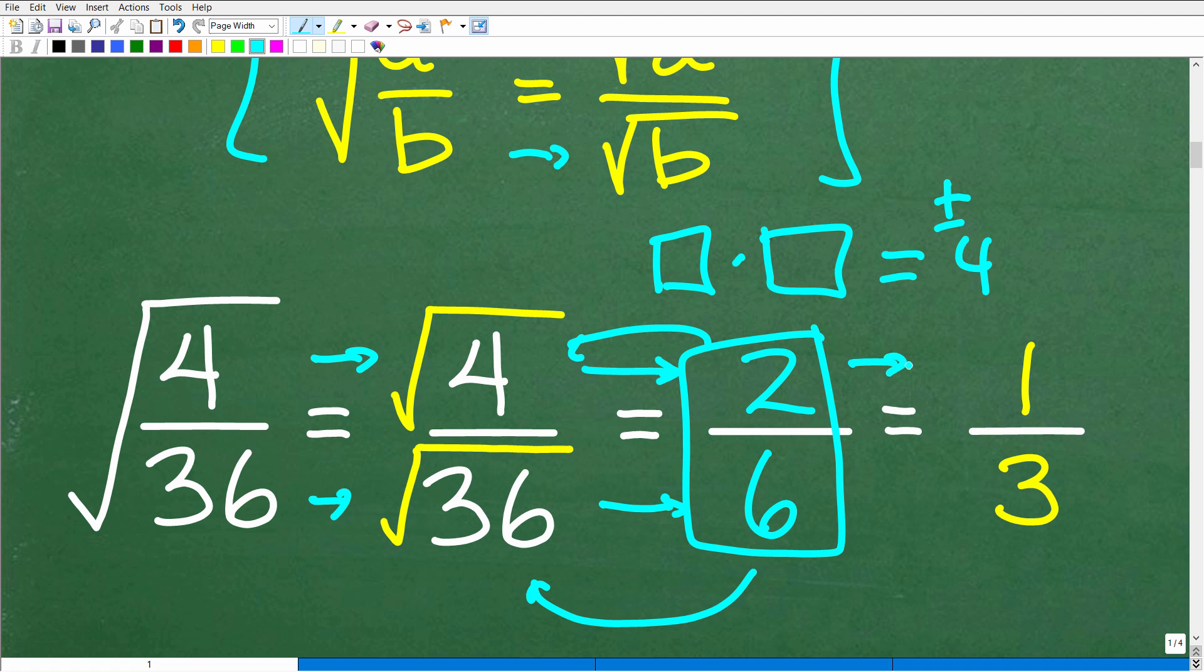Again, we need to simplify all fractions we run into, and we can reduce that down to 1 third. 2 goes into 2, 1, and 2 goes into 6, 3. So there is the answer, 1 over 3.